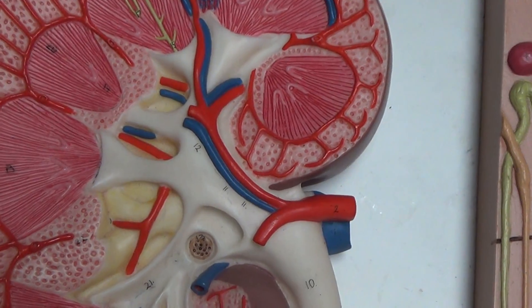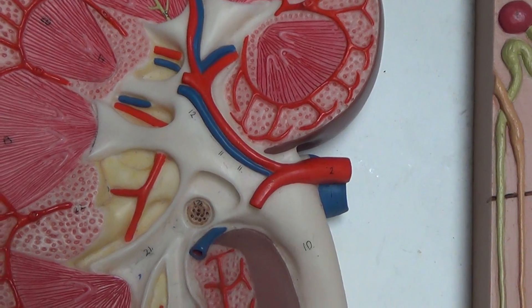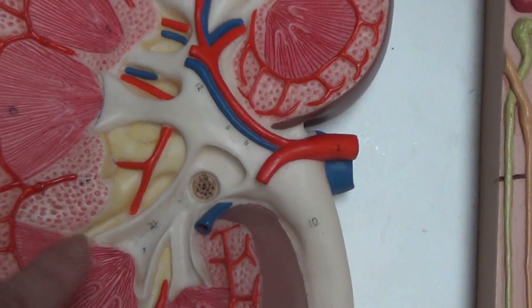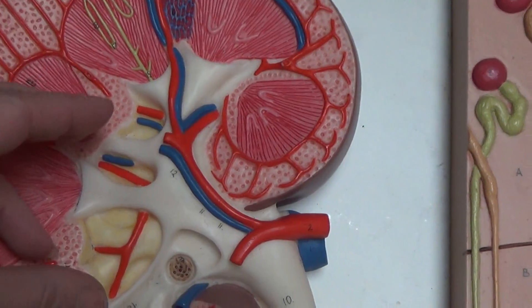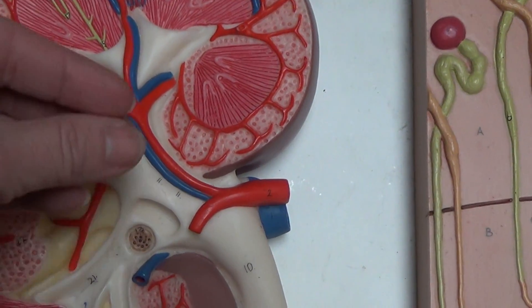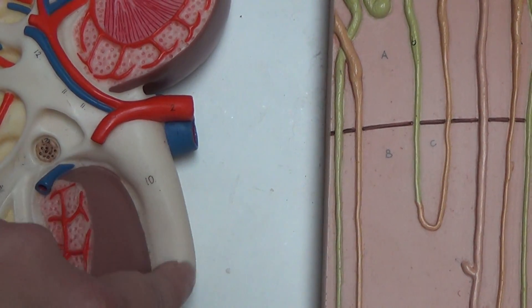Now the renal pelvis itself is divided into major and minor calyces. Three to five major calyces and several minor calyces per kidney. The renal pelvis is going to take urine and store it and move it towards the ureter. And this is the ureter leaving the kidney.